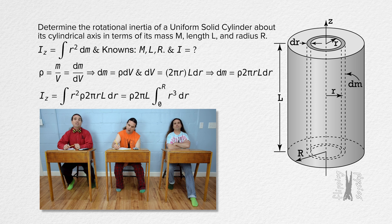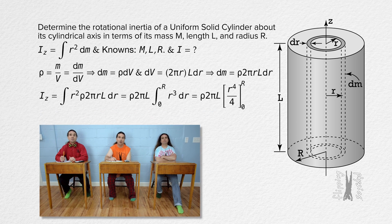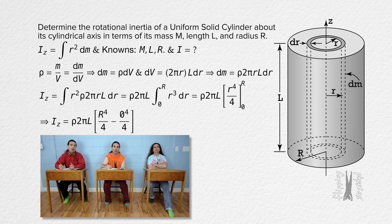Please evaluate this integral. The integral of lowercase r cubed with respect to lowercase r is lowercase r to the fourth power over four, and we keep the limits of zero and uppercase R. Substituting in: zero to the fourth power over four equals zero and two over four equals one-half. So the rotational inertia equals pi over two times volumetric mass density times the length of the cylinder times the radius to the fourth power.